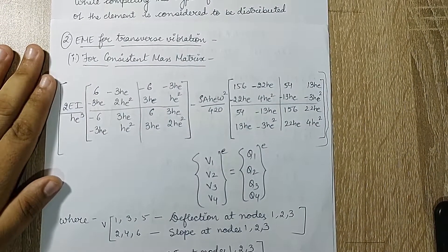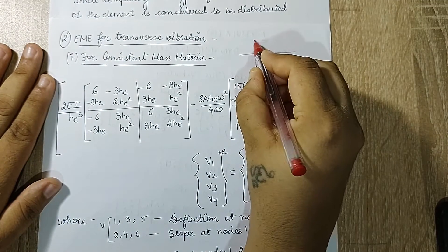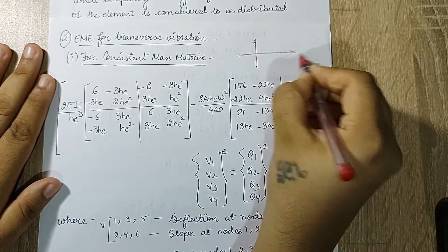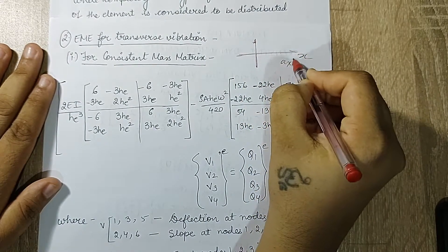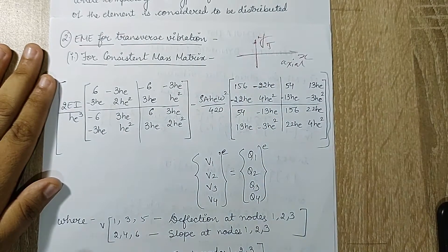Next we will go for FME for transverse vibration. Now if this is the axis of the body, transverse means in this direction. So if the axis is along x, this will be your axial vibration. The transverse will be along y axis.